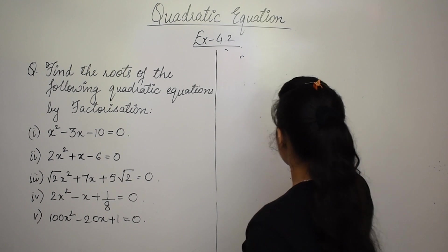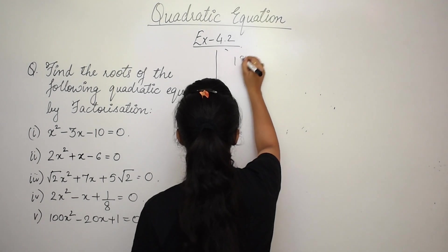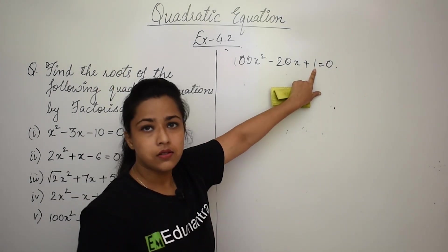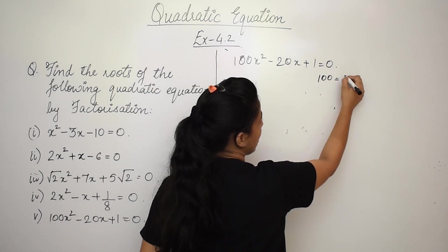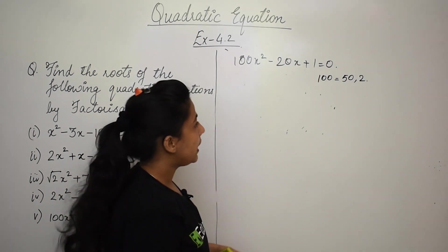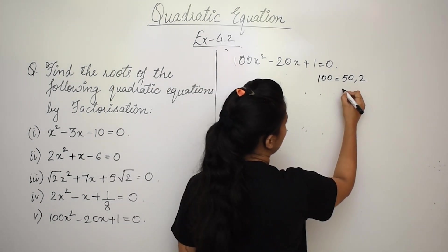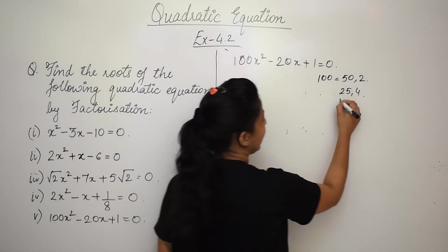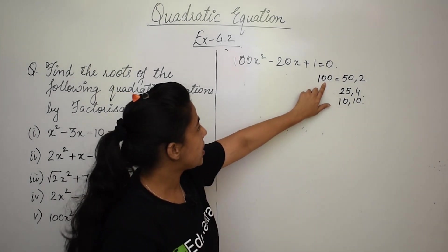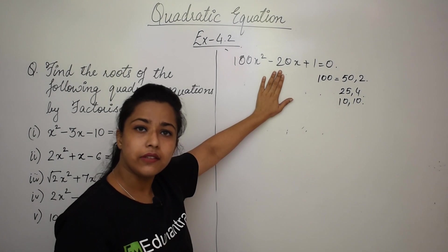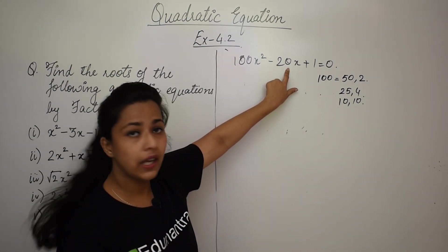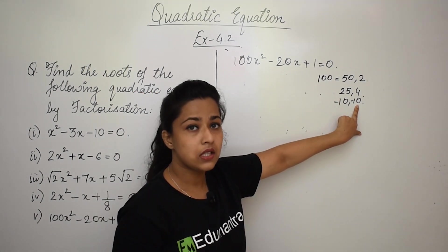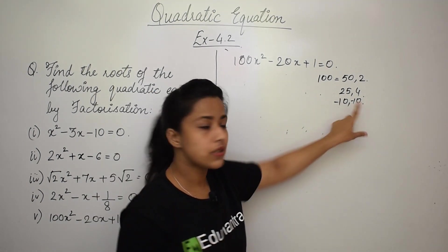The fifth equation is 100x² - 20x + 1 = 0. Here A×C = 100 × 1 = 100. We need factors of 100 that add to -20. Since the product is +100 and the sum is -20, both numbers must be negative. The factors 10 × 10 = 100 and (-10) + (-10) = -20. So we use -10x and -10x.